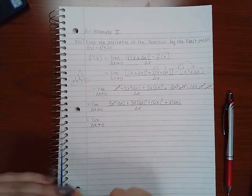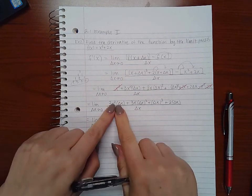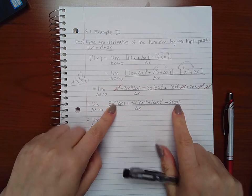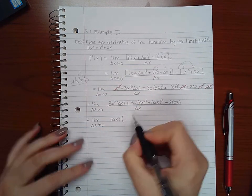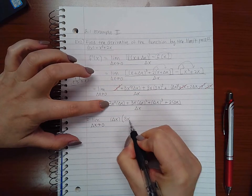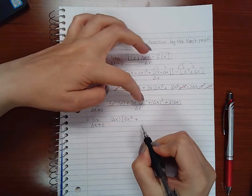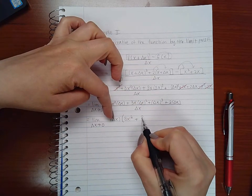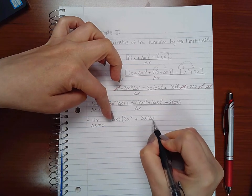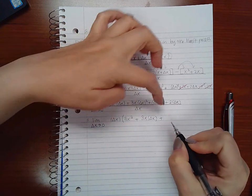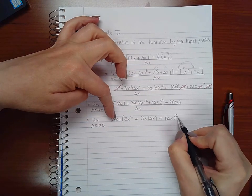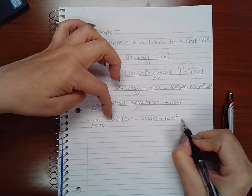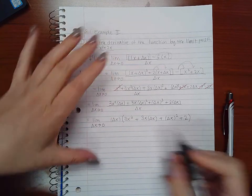So now I'm going to do the same trick as I did before. All of these have a delta x factor, so I'm going to factor that delta x out. When I do that, this will just become three x squared. This will have one of them come out, so it'll be three x times only one delta x. This will have a factor come out, so it would be delta x squared. And then this delta x factor would have come out, just leaving me with a two.